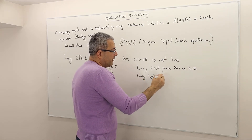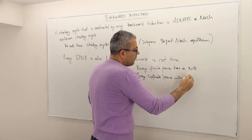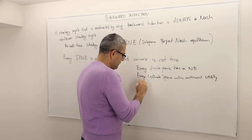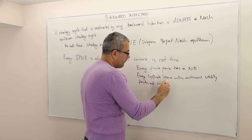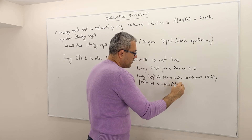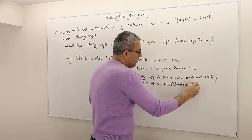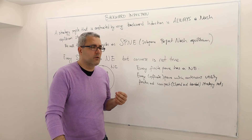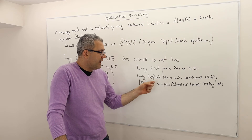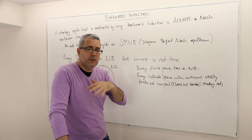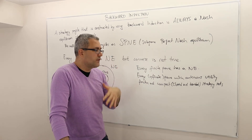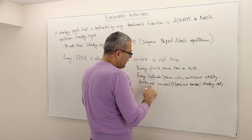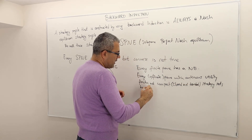This also extends to games with infinite strategies, as long as the utility functions are continuous and the strategy sets are compact — that is, closed and bounded. For example, the Cournot game has infinitely many strategies, but the profit function is continuous and the strategy set is compact, and so it has a Nash equilibrium.